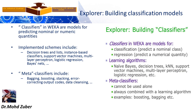Explorer: building a classification model. Classifiers in Weka are models for predicting nominal or numerical quantities. Implemented schemes include decision trees, list classifiers, support vector machines, multi-layer perceptron, logistic regression, Bayes nets, etc. Meta classifiers include bagging, boosting, stacking, error correcting output codes, and data cleansing. These are all the building blocks of classifiers in Weka.